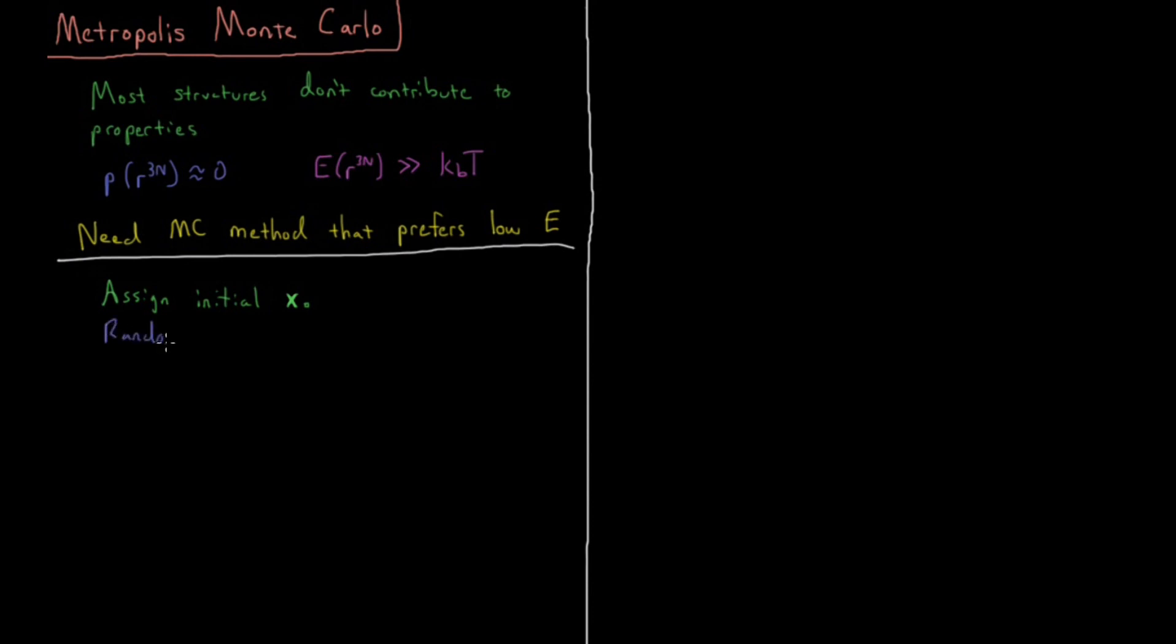Then we randomly perturb it. That's one key difference—we are not choosing a completely new structure randomly, we are perturbing the old one. But how we perturb and whether we accept it is the key difference. So xₙ₊₁ = xₙ + xᵣₐₙ𝒹. At each step, there's some random perturbation of our structure, displacing it by a random amount in a random direction. That's the Monte Carlo part.